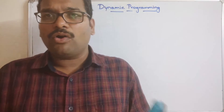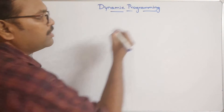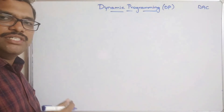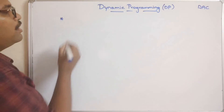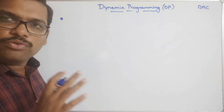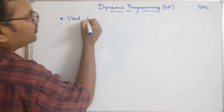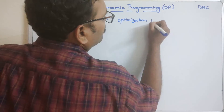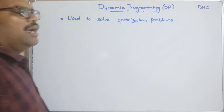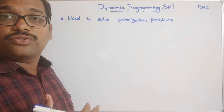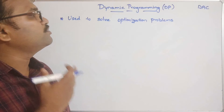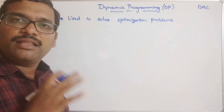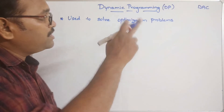Dynamic programming is similar to our divide and conquer method. Divide and conquer is abbreviated as DAC, and dynamic programming is abbreviated as DP. The main goal of dynamic programming is to solve optimization problems — problems which have multiple solutions and we select the optimal solution based upon the constraints.